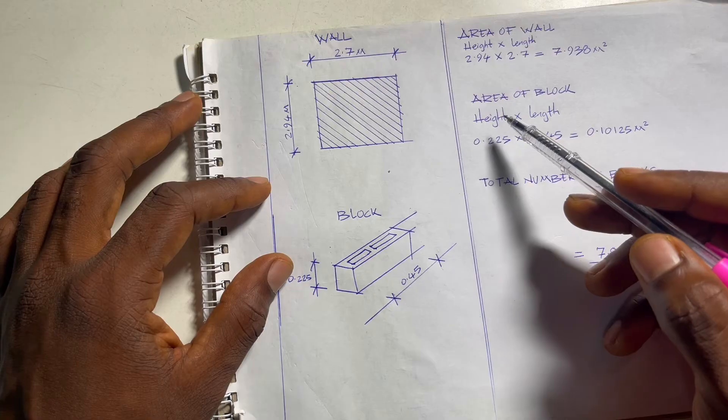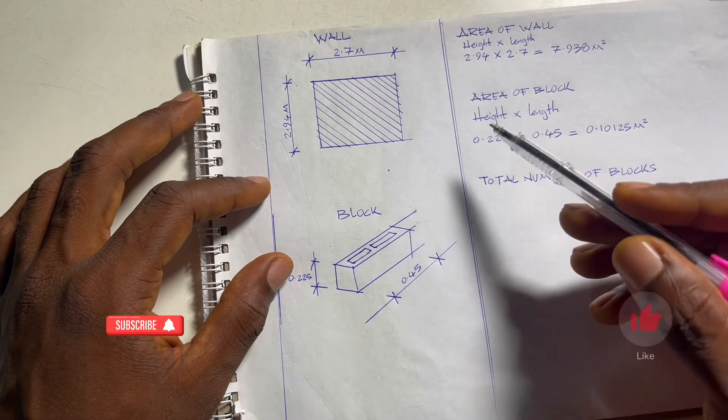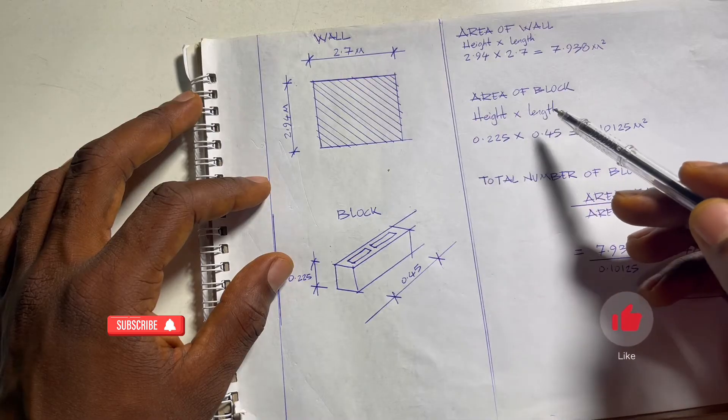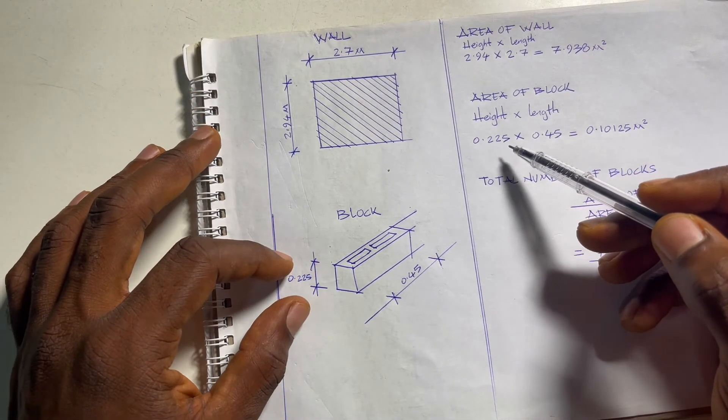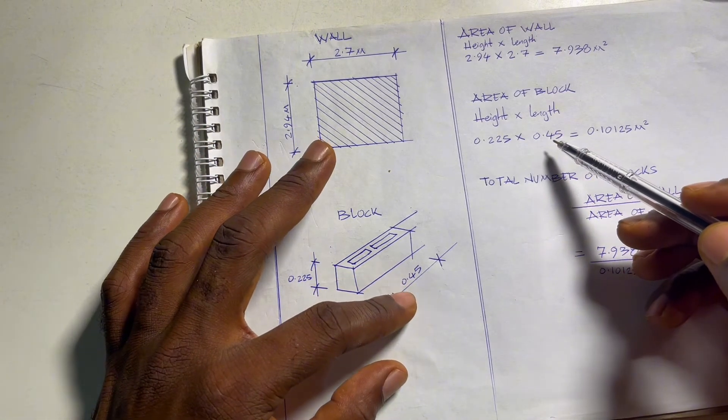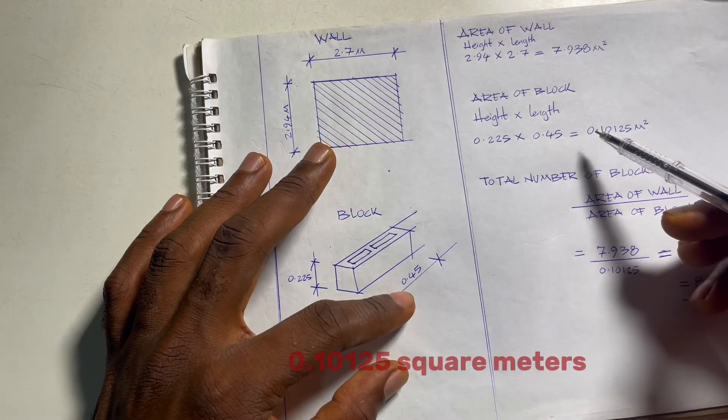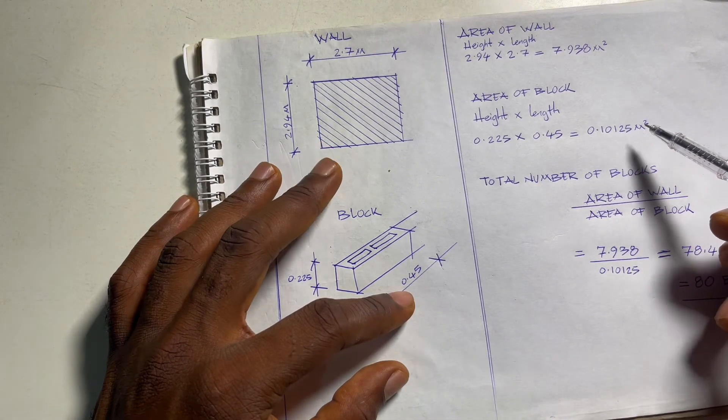For the area of the block, the block is typically going to be the same thing, the height times the length. Our height is 0.225 meters times the length which is 0.45 meters and we have 0.10125 square meters.